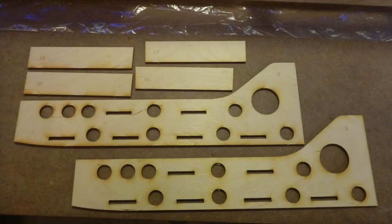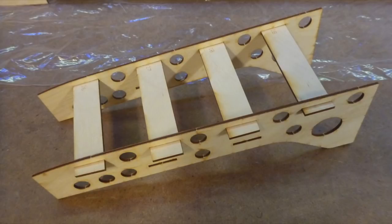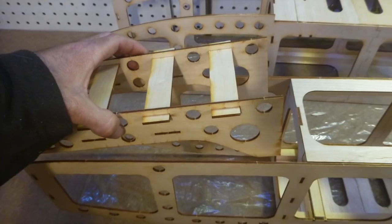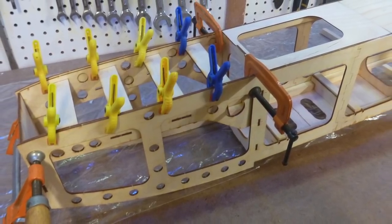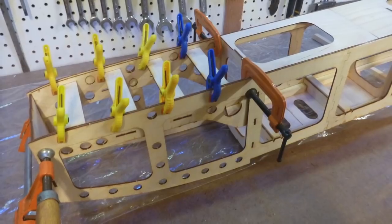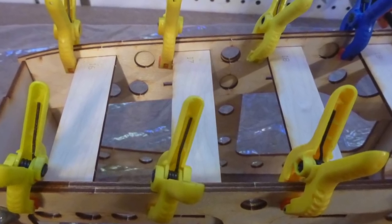Next, locate parts number 3, number 16, number 17, and two number 18s. Without gluing quite yet, assemble them into a ladder-like structure. Use some clamps to hold the structure into the bottom of the front of the fuselage. This will form the battery tray.